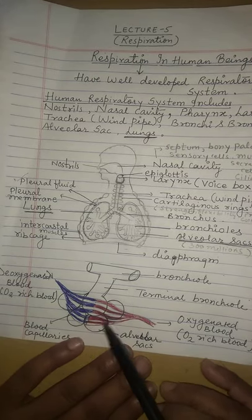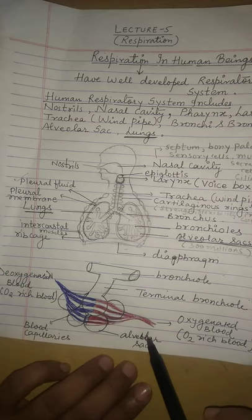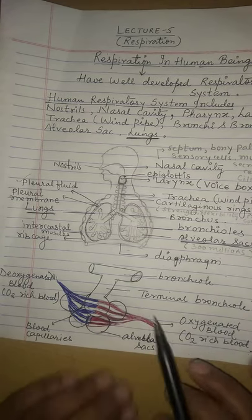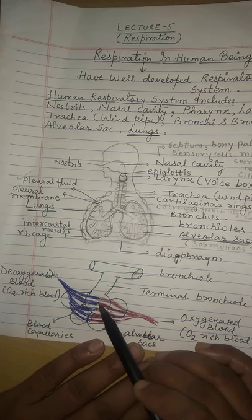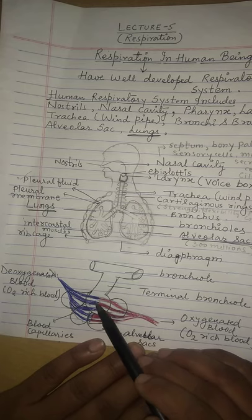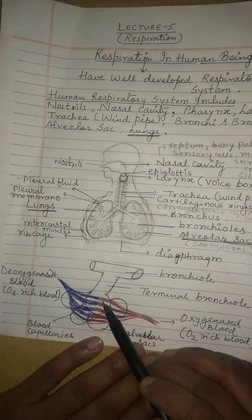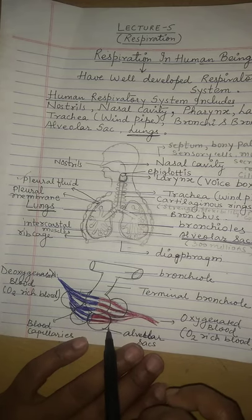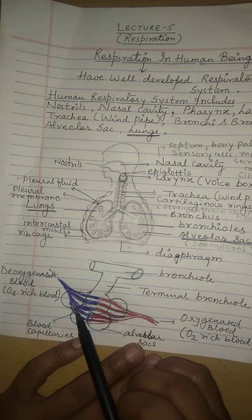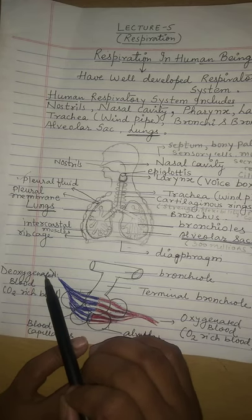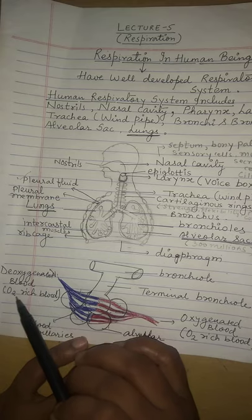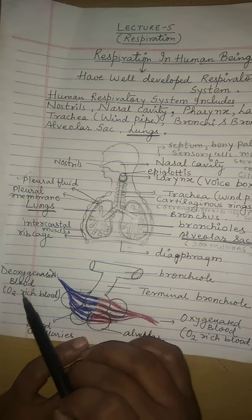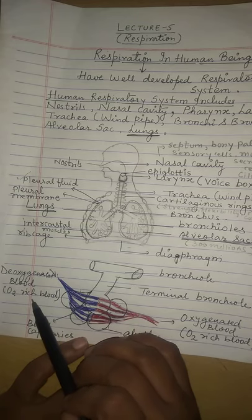Looking at the diagram, the large balloon-like structures are the alveolar sacs. When carbon dioxide comes from the blood, an exchange occurs. In the blood capillaries surrounding the alveolar sacs, there are two types of blood: blue represents de-oxygenated blood, which has very high carbon dioxide content. This de-oxygenated blood comes from the body's cells, where respiration has produced CO2.